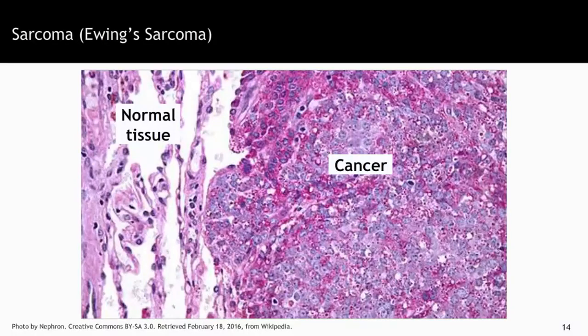This is even clearer in this example of sarcoma — in this particular case, a Ewing sarcoma. On the left you see normal connective tissue with lots of space between the cells. And on the right you see how the cancer is just uncontrolled growth, a proliferation of cells with big nuclei that don't look normal. There's just a huge difference that is very obvious between the left and the right-hand side of the slides.